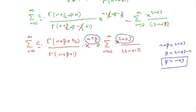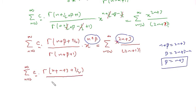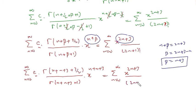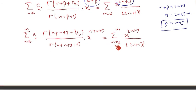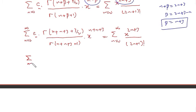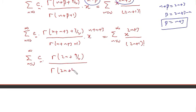For this value of beta, the powers of x on both sides coincide. Substituting beta = n+3, the left side becomes sum from n=0 to infinity of c_n times gamma(n plus n plus 3 plus 3/2) — which simplifies to gamma(2n plus 9/2) — over gamma(2n plus 3 plus 1), which is gamma(2n plus 4), times x to the power 2n plus 3, equal to the right-hand side series.